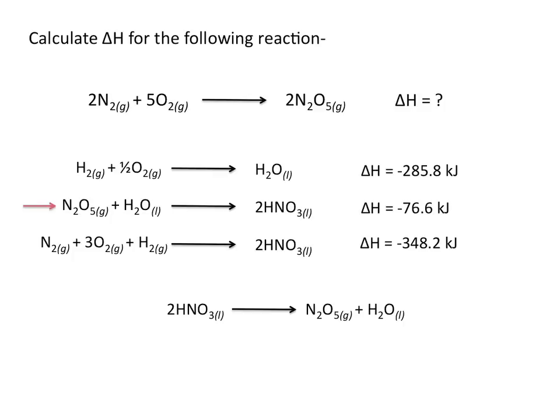The first thing we need to do is flip this equation so that N2O5 is on the product side. We also need to multiply this equation by 2 because the reaction of interest has 2 moles of N2O5 on the product side. Remember we perform the same operation on delta H as we did on the equation — flip the sign on delta H and multiply it by 2.